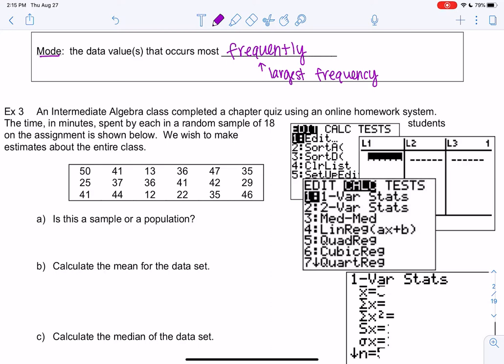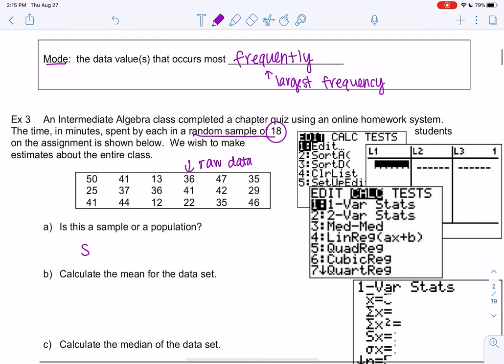And so I'm going to help you find all this on the calculator just to save a little bit of time. So we have an intermediate algebra class. They had a chapter quiz online, and we recorded the amount of time they each spent in a random sample of 18 on the assignment. So that would be my sample size. And we want to make estimates about the entire class. And we'll see a table of raw data. So this is only a sample because it says this is a random sample of 18, and so we're making the assumption that the class is probably bigger than that. So this is a sample because it's only part of the class.